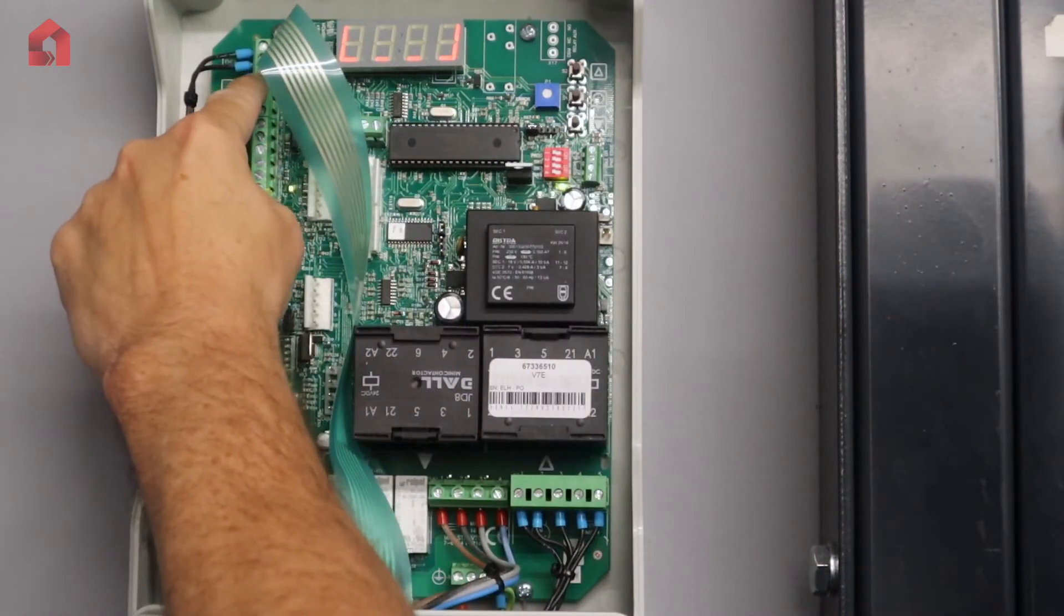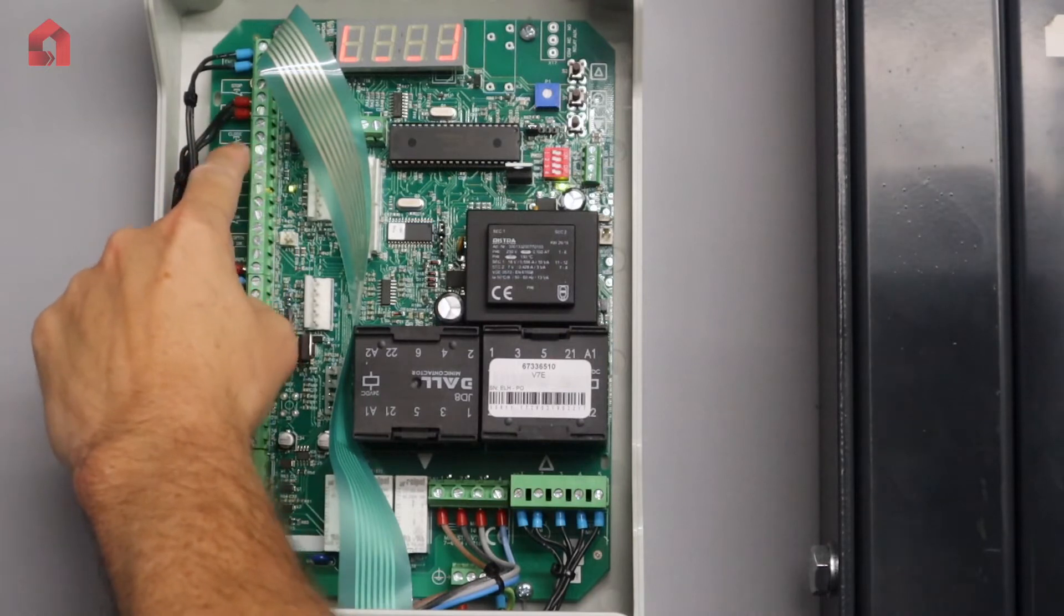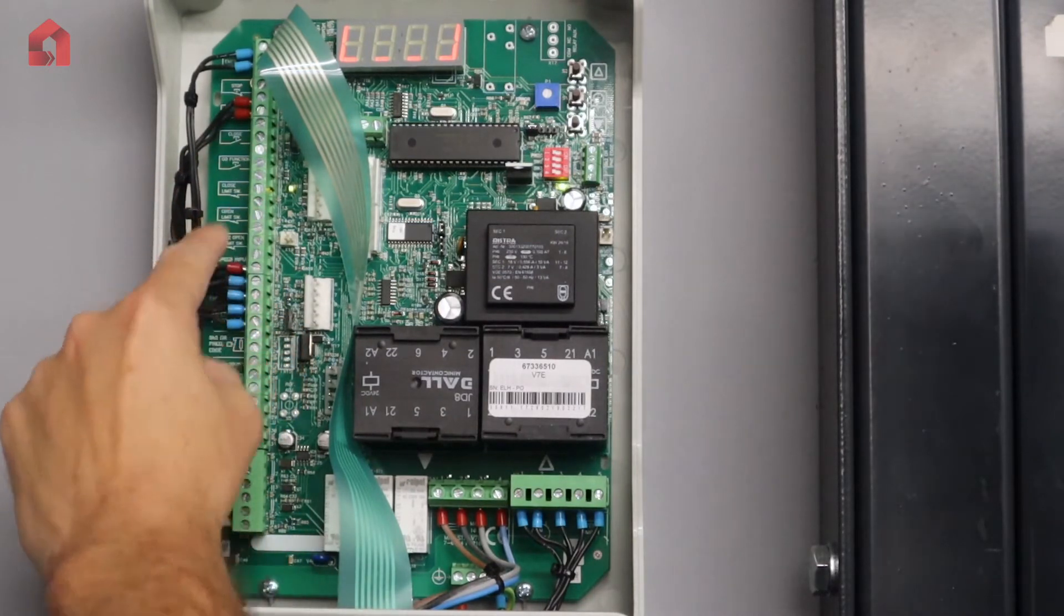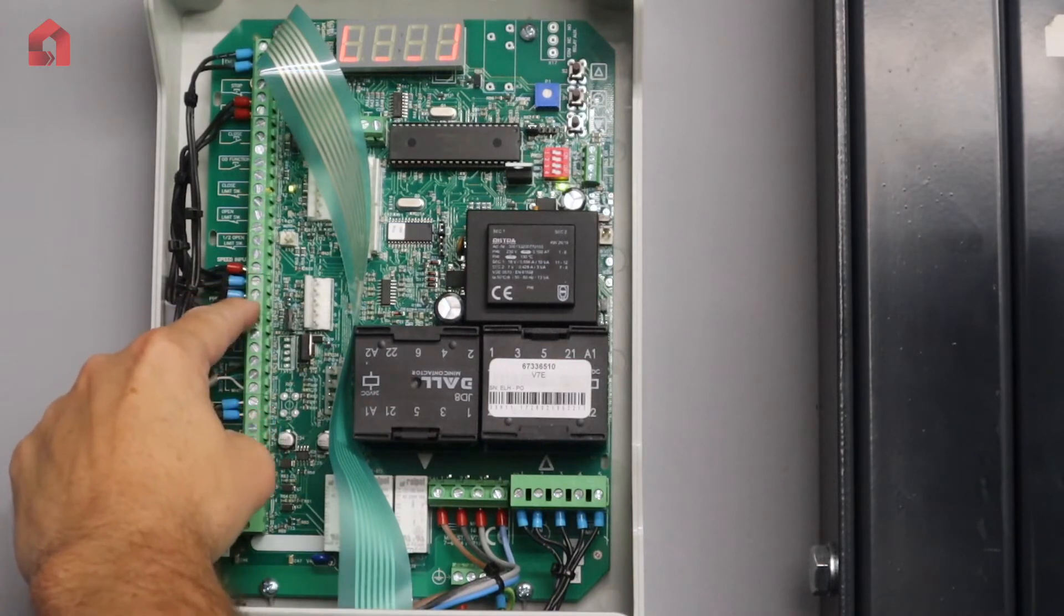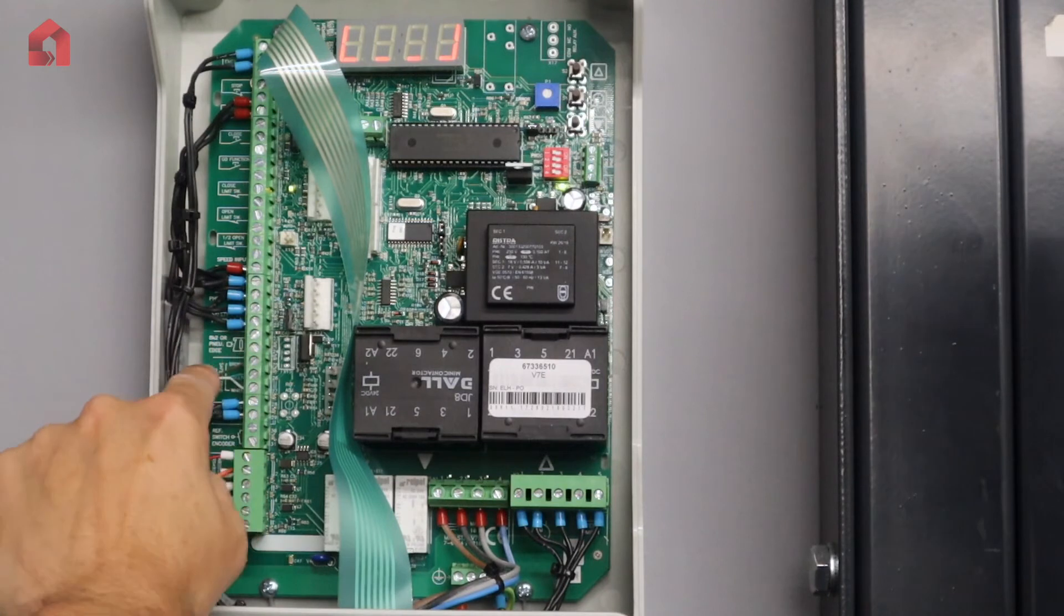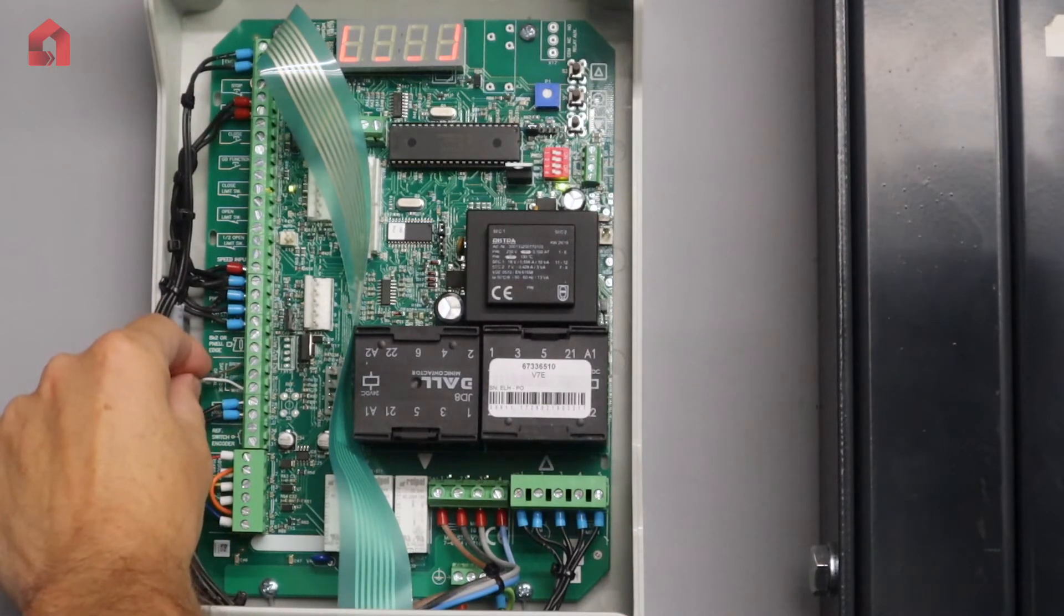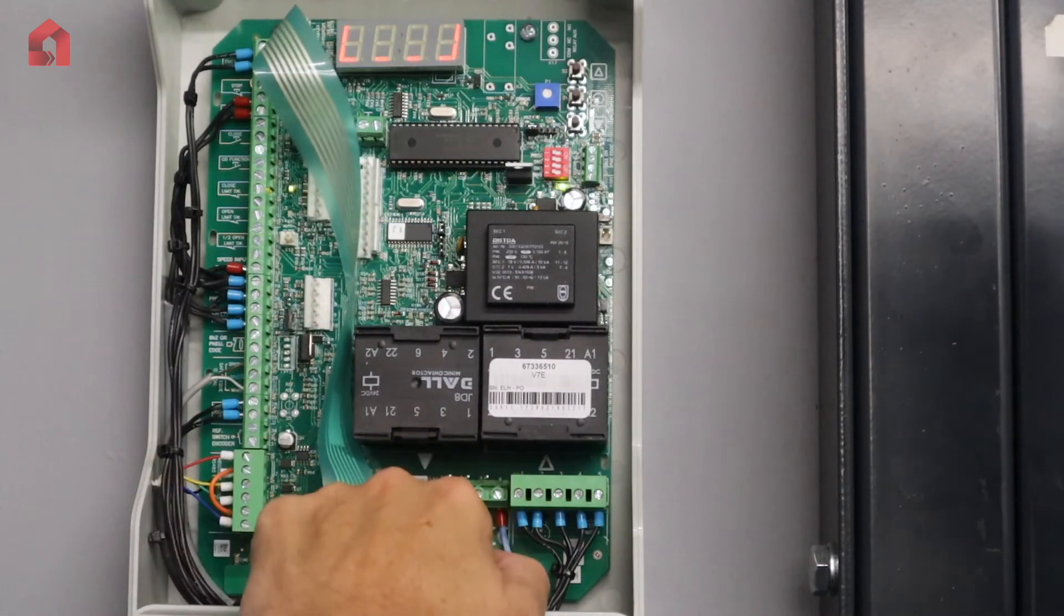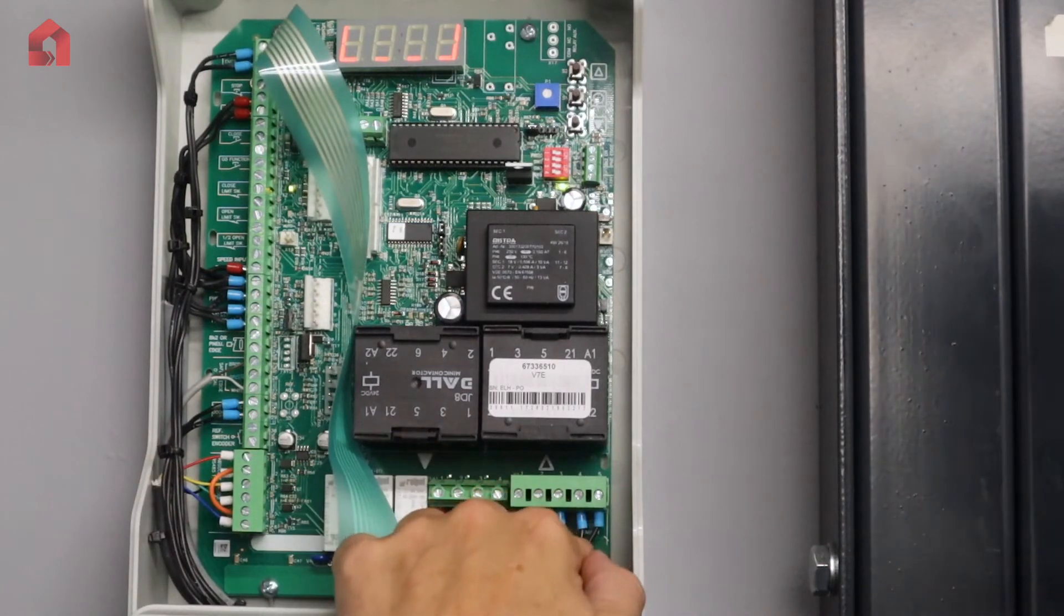You've got various stop circuits on the board. You've got an open, a close, and a go function for external push buttons. You've got mechanical limit connections, you've got an 8k2 ohm resistive safety edge connection, optical safety edge connection, your encoder connection, your mains connection, and your motor connections.